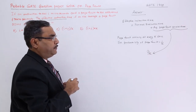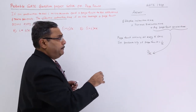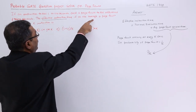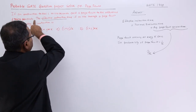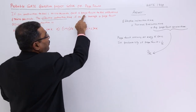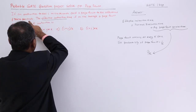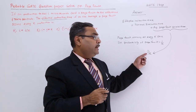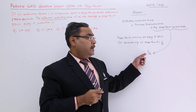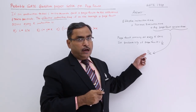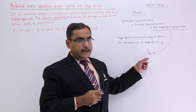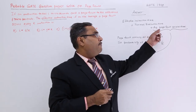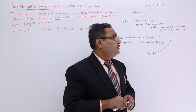Why is the average page fault service time j/k? Because j microseconds is the additional time required when a page fault occurs, and the probability of occurrence of a page fault is 1/k. So j multiplied by 1/k gives j/k as the average page fault service time.